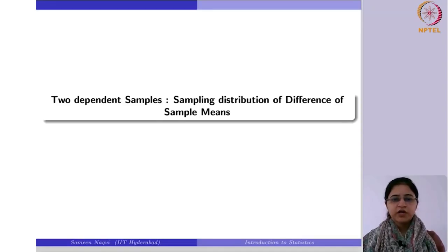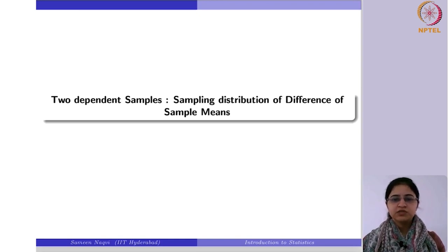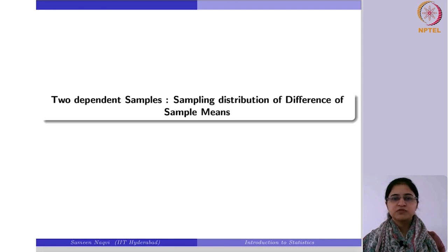Now we are going to see what happens if you are drawing two dependent samples. What will happen to the sampling distribution of the difference of the sample means? In real life, we may not always come across independent samples, because the observations that we draw are more or less likely to be dependent on each other.